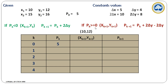When k equals 0, the P0 value — the initial decision parameter — is 5. Since the decision parameter is positive, we choose the formula that increments both x and y coordinate values. So the next coordinate values are 11 and 13. The next decision parameter is calculated as 5 plus 2*delta_y minus 2*delta_x, giving us plus 3.